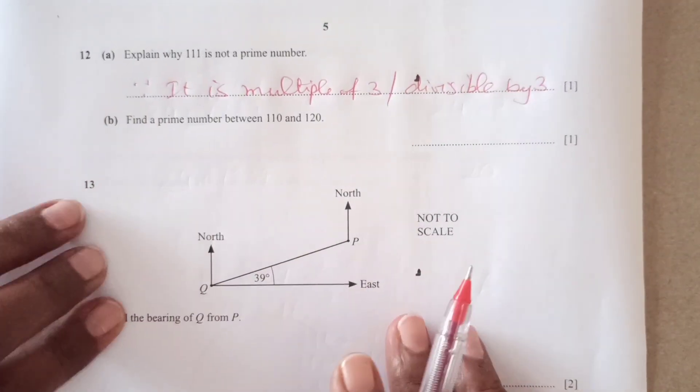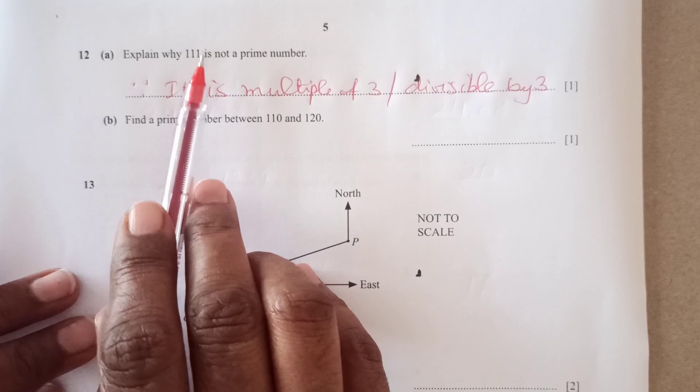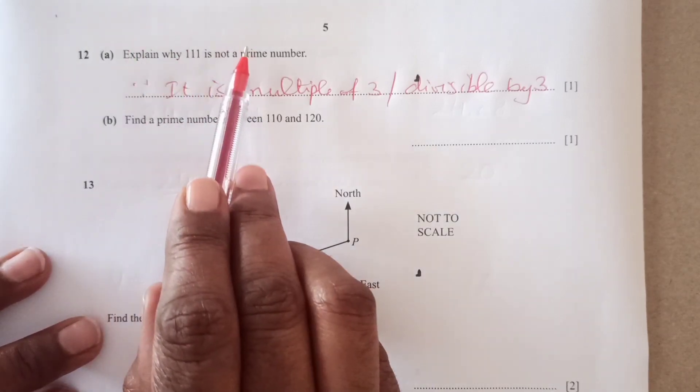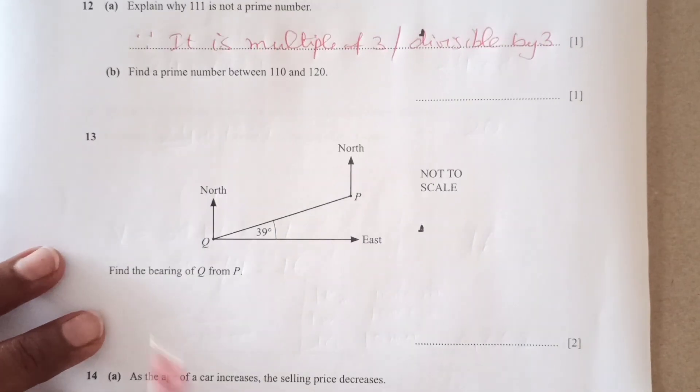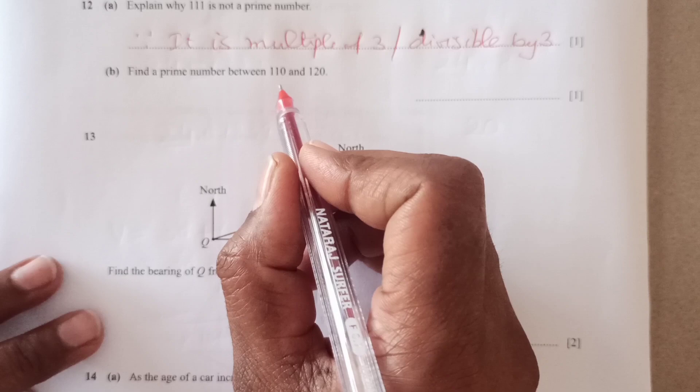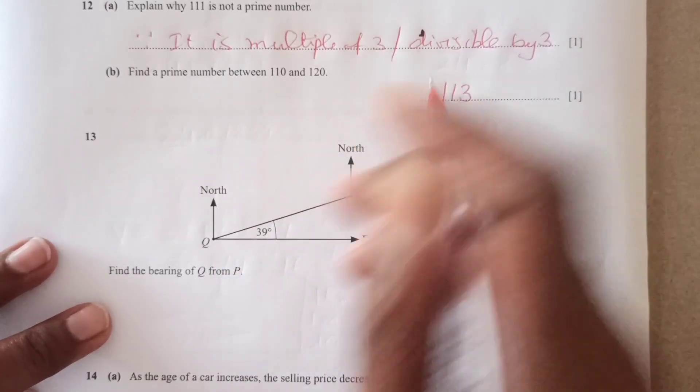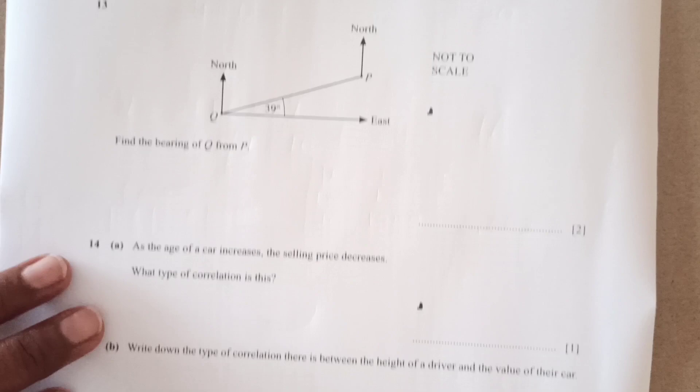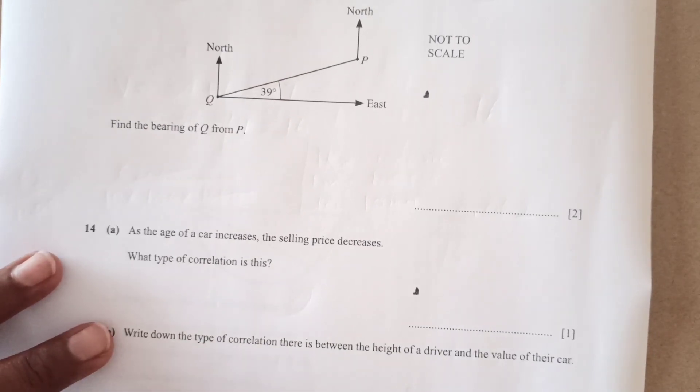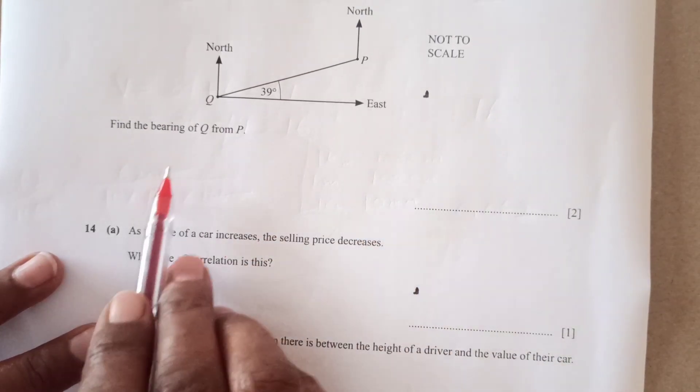But the prime number should have only, it should be divisible by number itself and 1, right? Find the prime numbers between 11 and 120. So 113 is the number that is prime number between here.